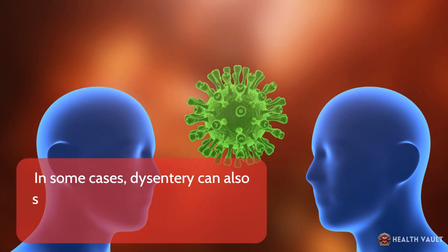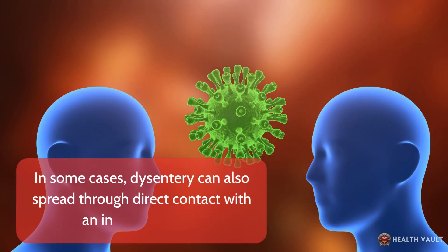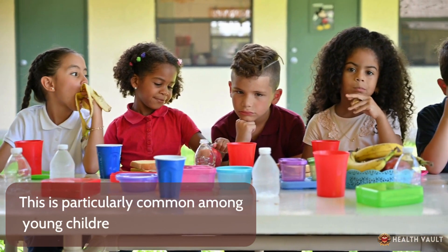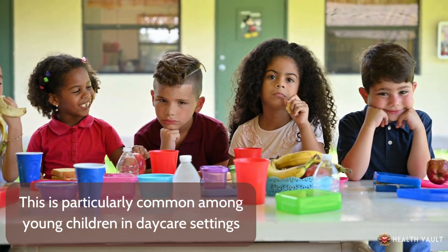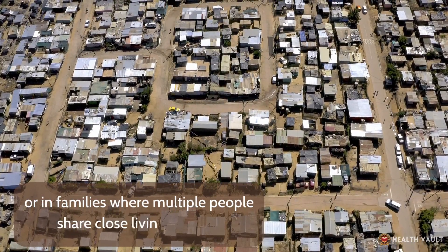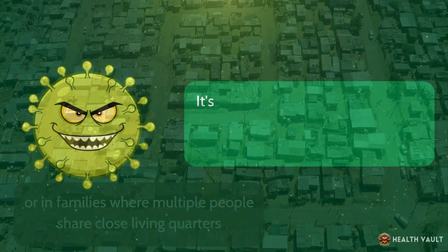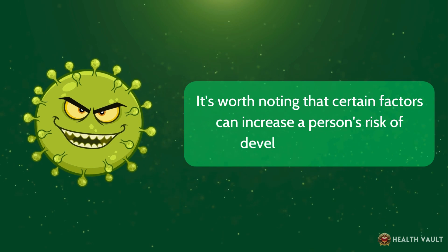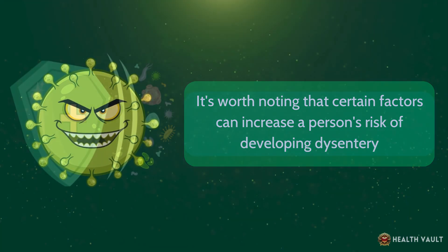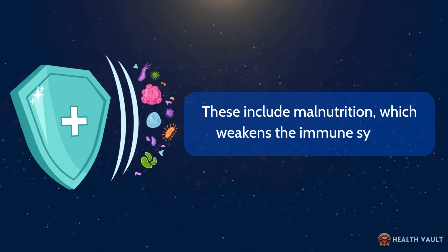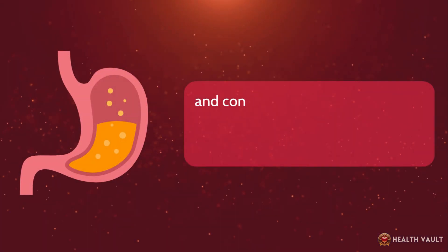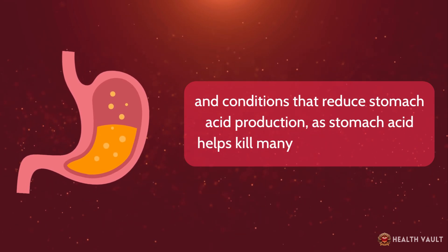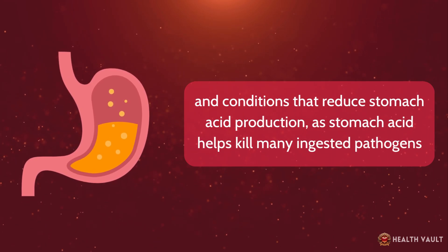In some cases, dysentery can also spread through direct contact with an infected person. This is particularly common among young children in daycare settings or in families where multiple people share close living quarters. Certain factors can increase a person's risk of developing dysentery, including malnutrition, which weakens the immune system, and conditions that reduce stomach acid production, as stomach acid helps kill many ingested pathogens.